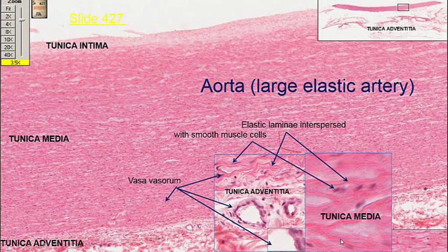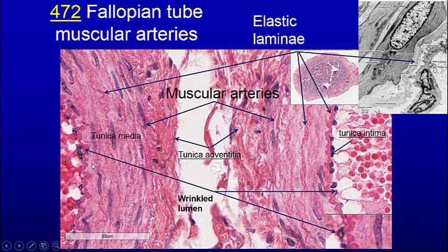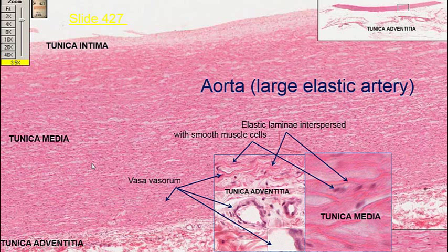Actually, they're more like laminae — elastic laminae, more like bedsheets — that are present in the muscle layer. This is the media, intima, media, and adventitia.